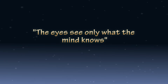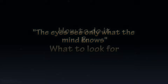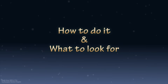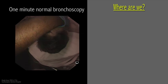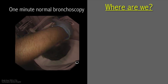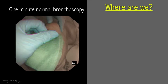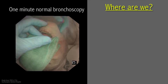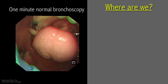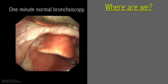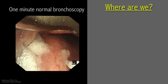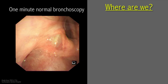There's an old dictum that the eyes will see only what the mind knows. This couldn't be more true than in bronchoscopy. To see the abnormal, the eyes have to be trained to identify the normal. At this stage I'm going to leave you with a one-minute normal bronchoscopy, and I would encourage you to try and name the bronchial divisions as we go along.